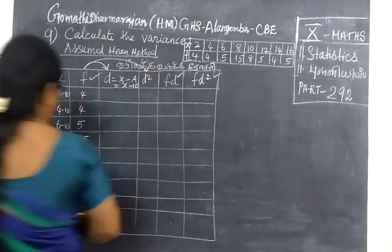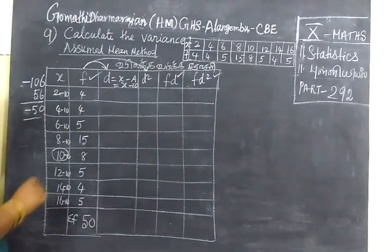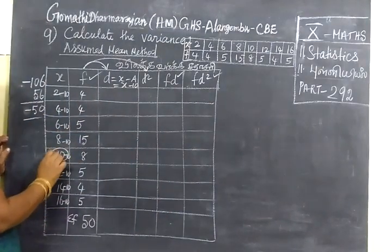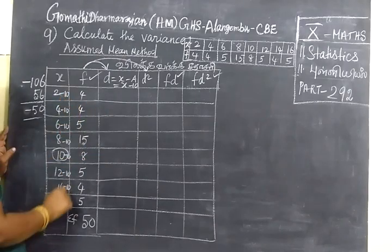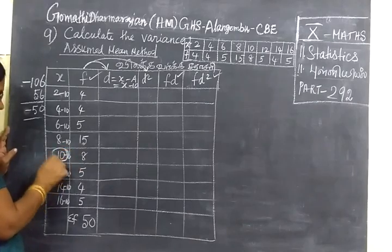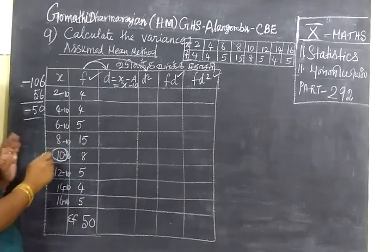We can get x value and frequency. If this is a value, a middle value, we are taking as assumed mean. Then take the value minus 10, the middle value, a middle value. Any number you can take.